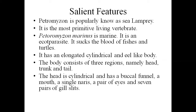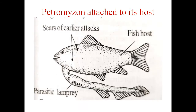It has an elongated, cylindrical, eel-like body. The body consists of three regions: head, trunk, and tail. The head is cylindrical and has a buccal funnel, a mouth, a single naris, a pair of eyes, and seven pairs of gill slits.